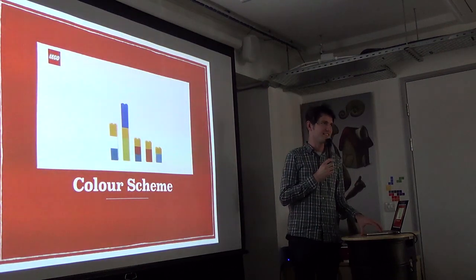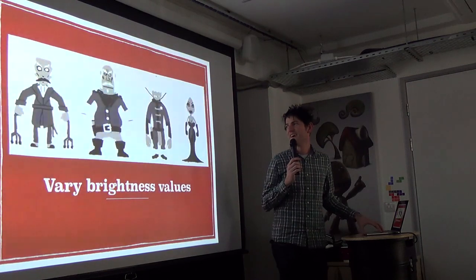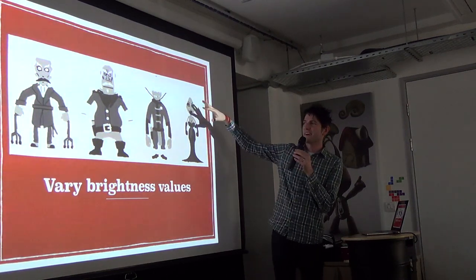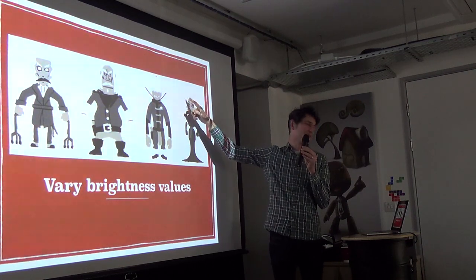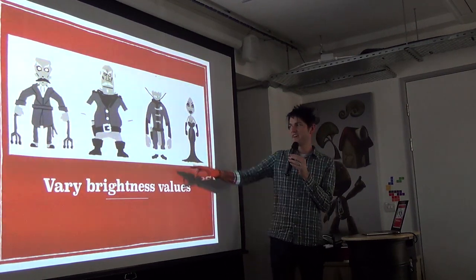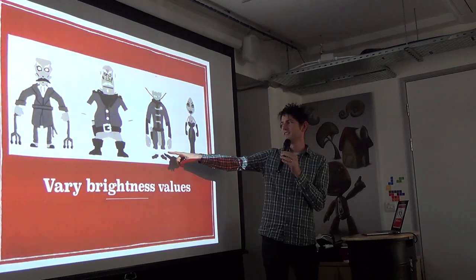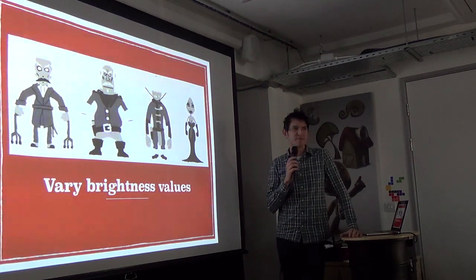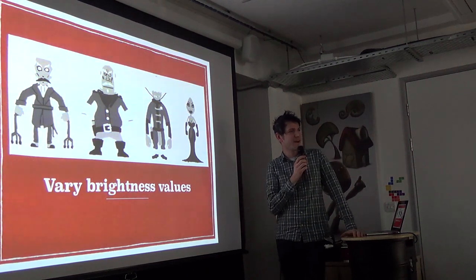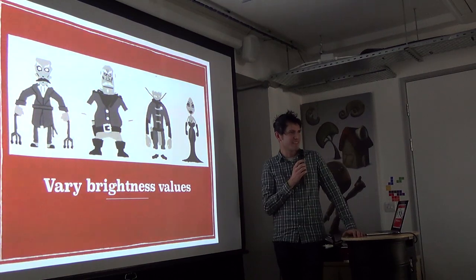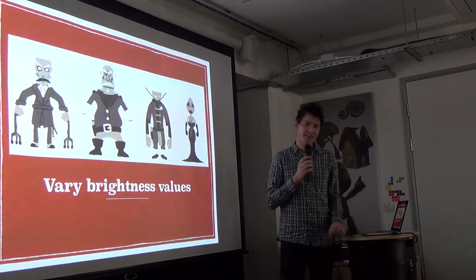Color schemes: different characters should have different color schemes. Vary brightness values — this is really important. Any two parts that touch on a character should vary in brightness value: black shoes, white socks, gray things. That's why Superman wears his pants on the outside — it helps you read the anatomy, see where his legs are and what pose he's in. If it were all one color, it would blend together.